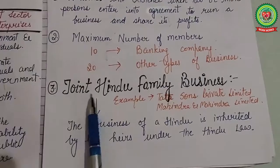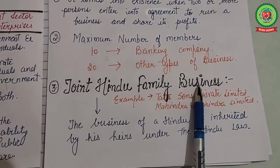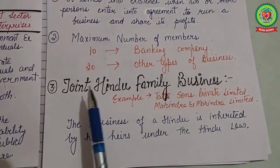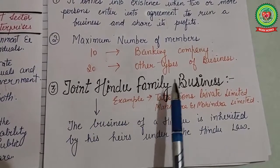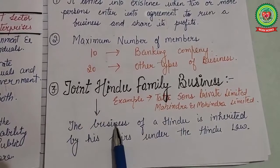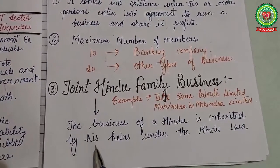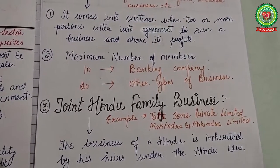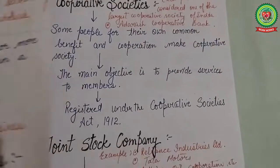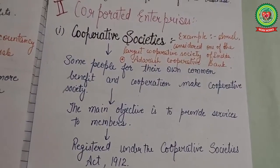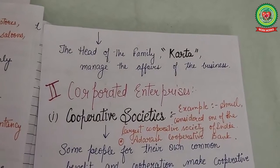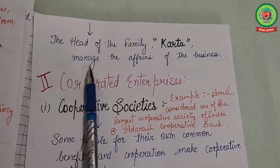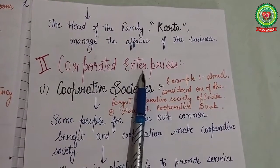Next is joint Hindu family business. Examples include Tata Sons Private Limited and Mahindra and Mahindra Limited. This is a business that is inherited by the heirs of a Hindu under Hindu law. Such a business where the head of the family, called the Karta, manages the affairs of the business is called joint Hindu family business.